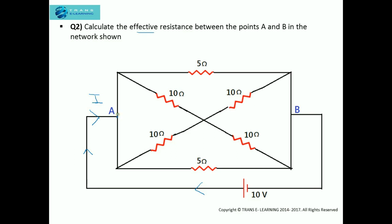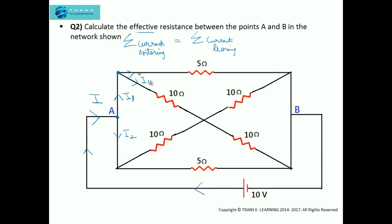We will take into consideration Kirchhoff's law, that is the junction rule or the current rule, which states that the sum of current entering the junction is equal to the sum of current leaving the junction. Here, let the current I reach a point where it gets divided into I1 and I2 because this is a junction. Now again it reaches another point and I1 will get divided into two currents, I11 and I12. So this I12 current will flow through the 5 ohm resistor.